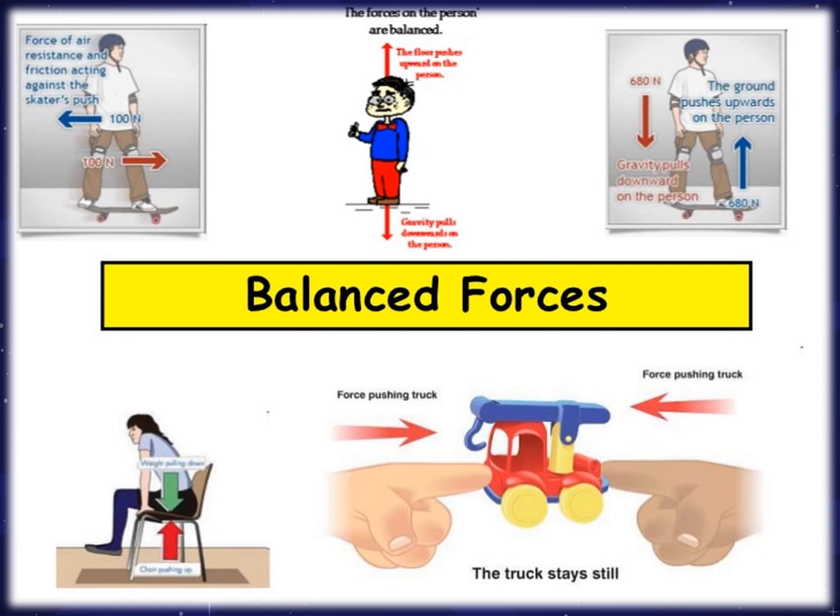If an object is in motion, it will keep moving in the same direction and at the same speed if the forces acting on it are balanced or constant. Look at the example: the force of air resistance and friction acting against a skater pushes to the left side, and the force going to the right is 100 newtons — so it is balanced. Look at the one sitting on the chair — it's the same amount of force, so there is no movement. Force pushing the truck at each side — one finger pointing left, one pointing right — the force is balanced, and the truck stays still.